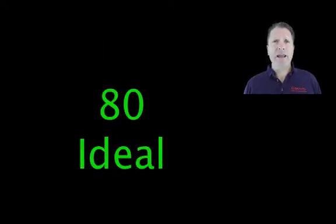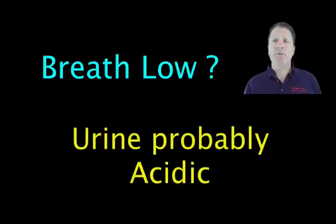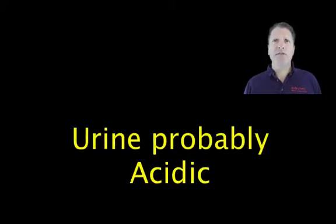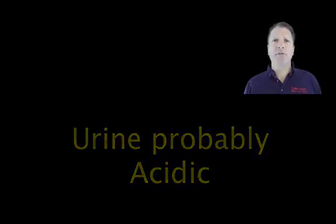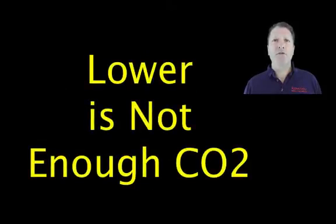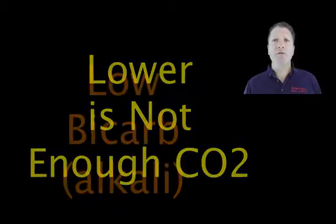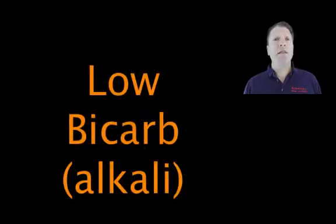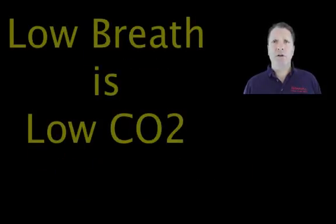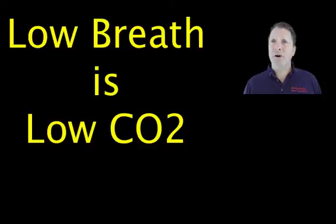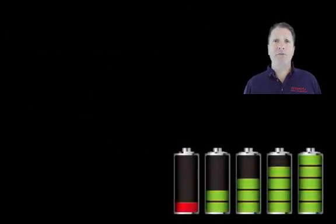About 80 breaths is ideal. If your breath rate was low, then your urine is probably acidic too. You can get pH test strips at most drug stores. A urine pH of about 6.4 is ideal. Lower numbers usually mean there's less CO2 in your urine than there should be. But if your breath rate was low, you already know you have an issue.